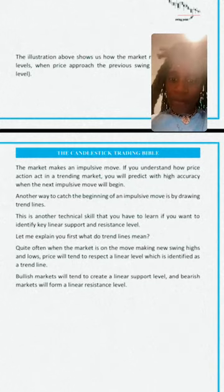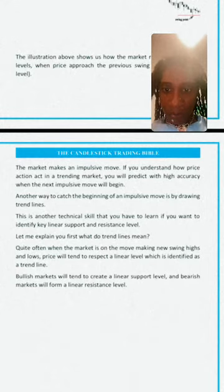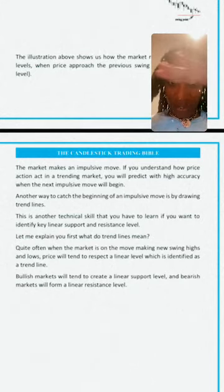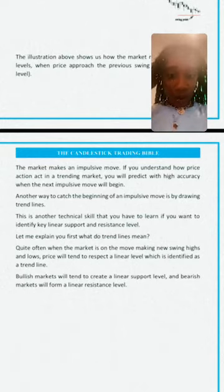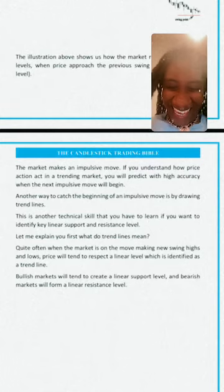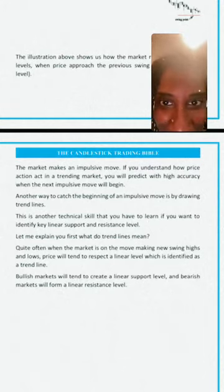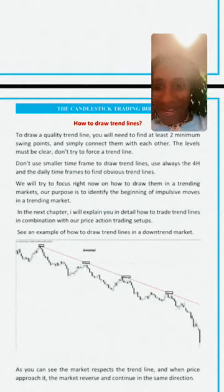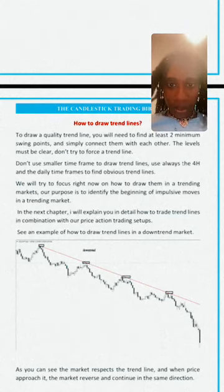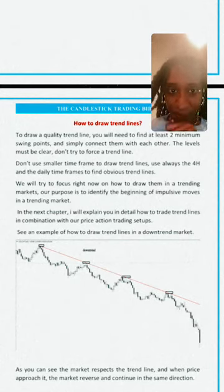Bullish markets will tend to create a linear support level, and bearish markets will form a linear resistance. To draw these trend lines, you need a minimum of two swing points — connect them together. You always want to start with a four-hour or daily time frame. Some people use the weekly if they're marking up charts at the beginning of the week. Get your four-hour chart, find two swing points, and connect them.